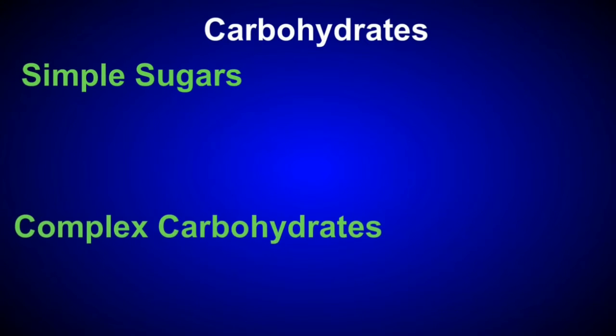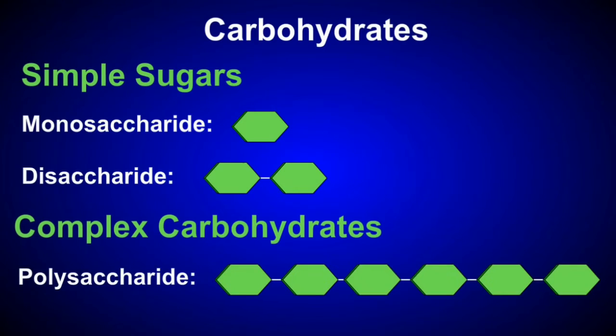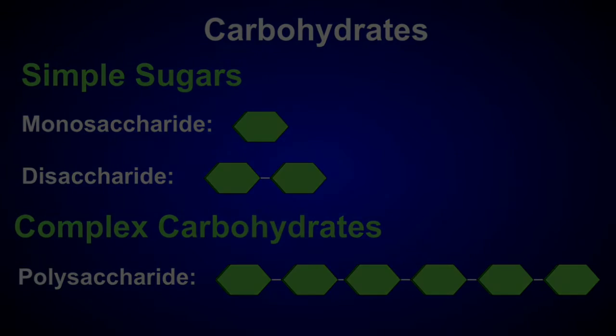We refer to carbohydrates as being either simple sugars or complex carbohydrates. Monosaccharides and disaccharides are commonly referred to as simple sugars. The term complex carbohydrates refers to the polysaccharides.